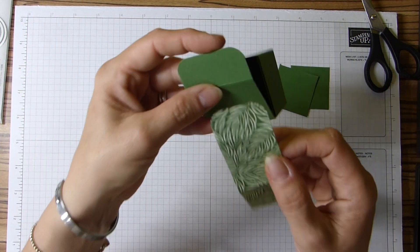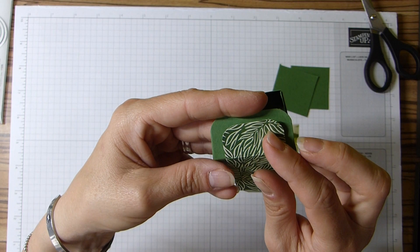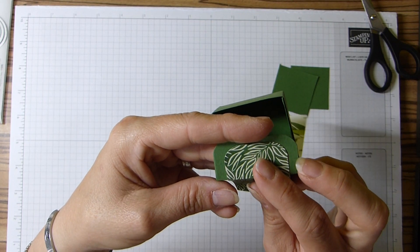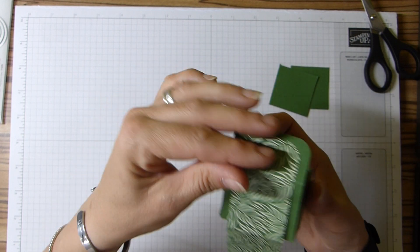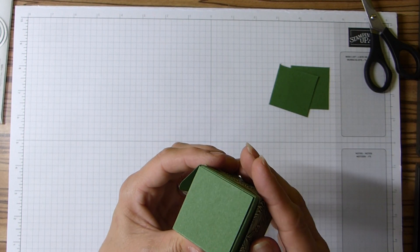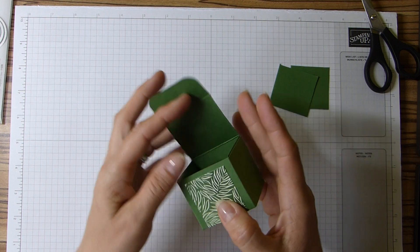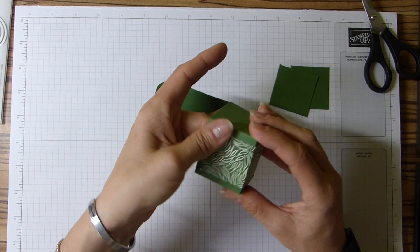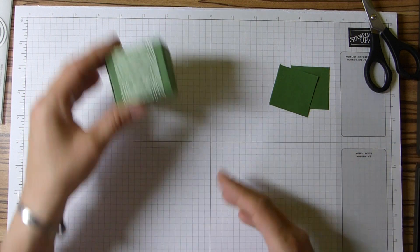And then we're going to pop it in place. So again, you can just find that fold that you've already done. Just ensure your sides here are equal, and then fold it around the box until we come back to the start almost. How pretty!